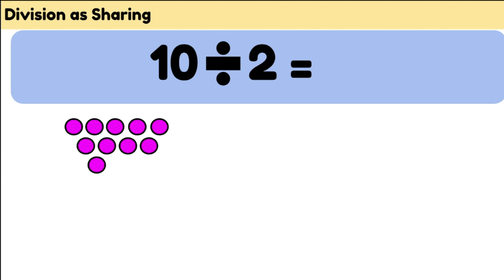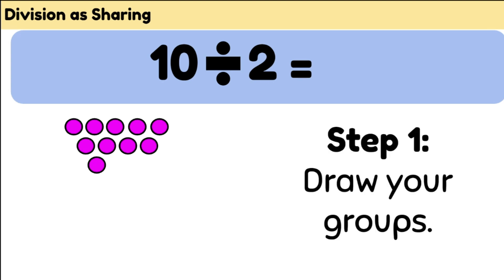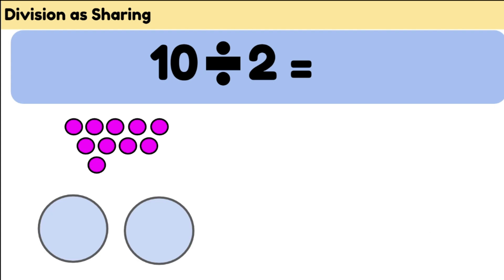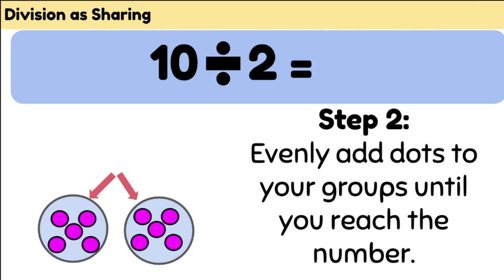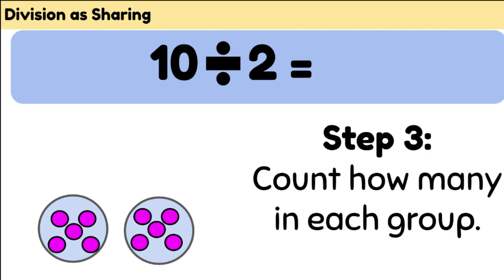I'm going to show you how to use sharing to solve this division problem: 10 divided by 2. First we're going to draw our groups. You're going to need two groups for this problem. We're going to share 10 dots out evenly between each group. We need to make sure that our groups are equal. In this case we can equally share out 10 between two groups and there are no remainders. Now we're going to count how many are in each group. There are five dots in each group and this becomes the answer to our division problem.